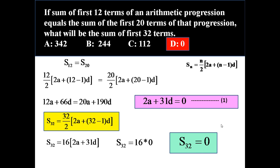Notice the pattern: S12 = S20, and 12 + 20 = 32, so S32 = 0. The same applied in the first problem: S8 = S12, and 8 + 12 = 20, so S20 = 0. As another example, if the sum of the first 10 terms equals the sum of the first 15 terms, then the sum of the first 25 terms will be 0. You can use this as a shortcut technique to answer any such type of question.